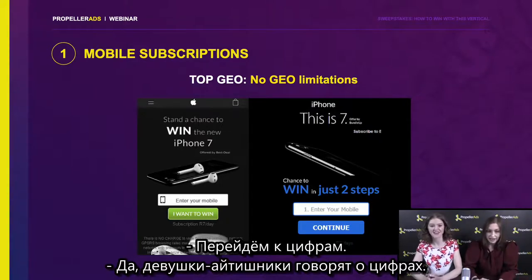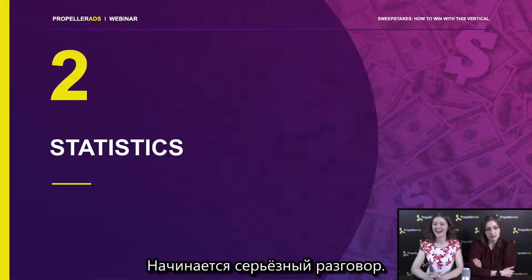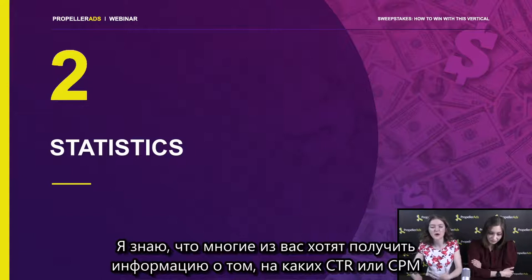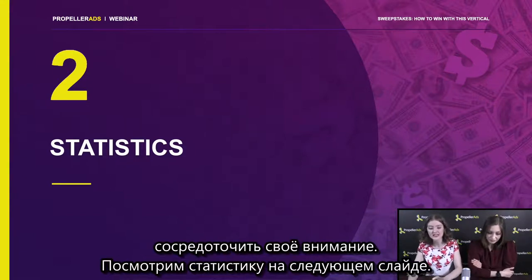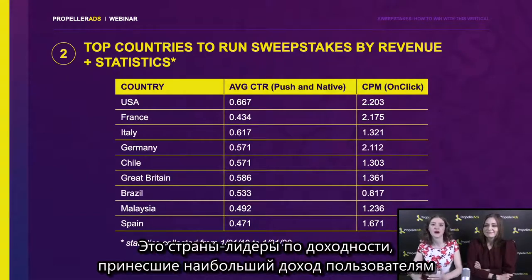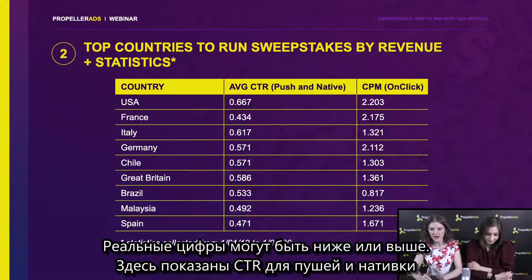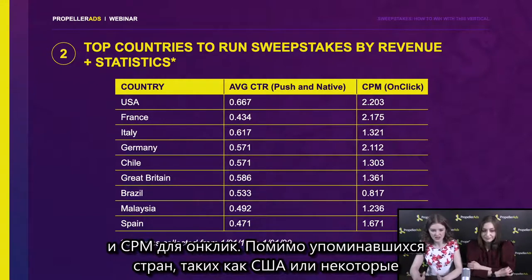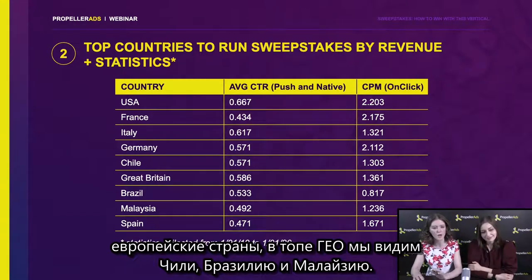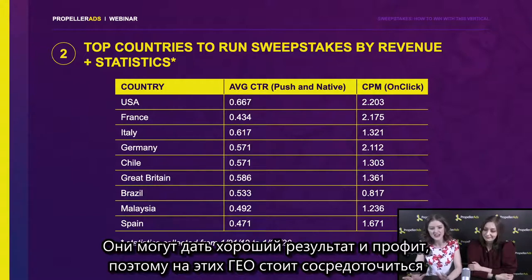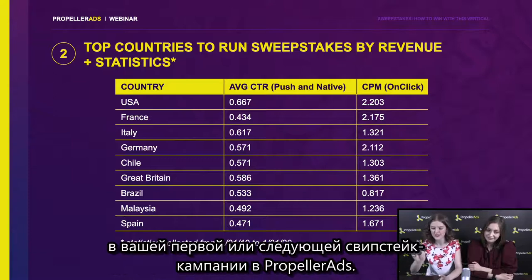Here are the top countries by revenue that provided users of our platform the biggest revenue for the previous year. Here you can see the average numbers — real numbers can be lower or higher, but here are the averages: CTR for push and native, and CPM for onclick. Among the countries already mentioned, like the United States or some European countries, you can also see GEOs like Chile, Brazil, or Malaysia that can really bring you good results and good profit. These are GEOs you should focus on during your first or next sweepstake campaign in PropellerAds.